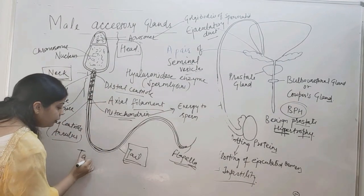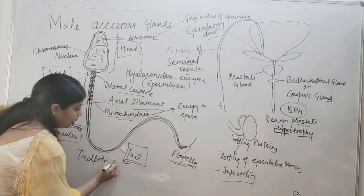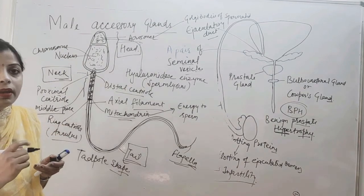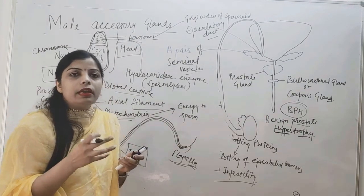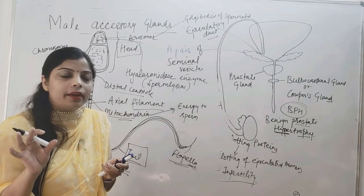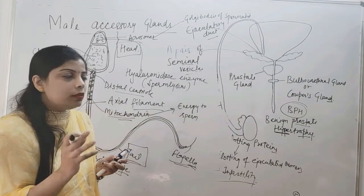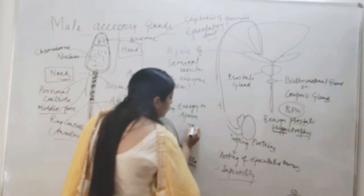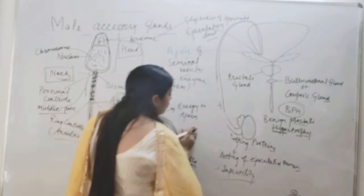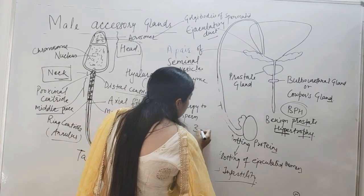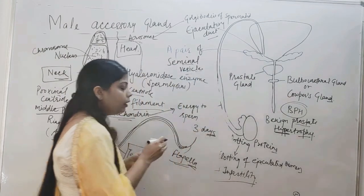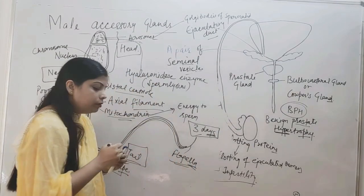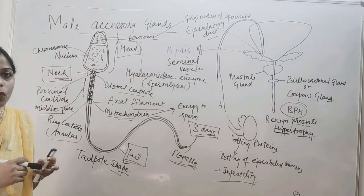The sperm has a tadpole-like shape. When it is ejaculated and present inside the female tract, it can survive for around 3 days, during which it can fertilize the ovum.